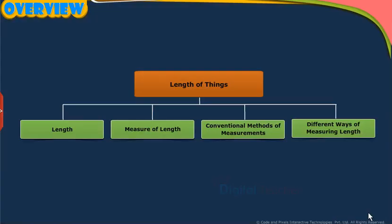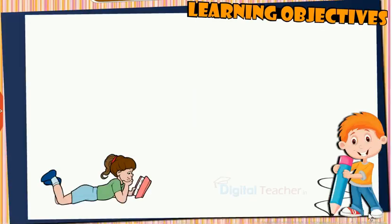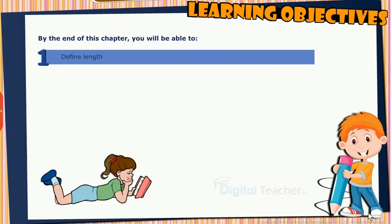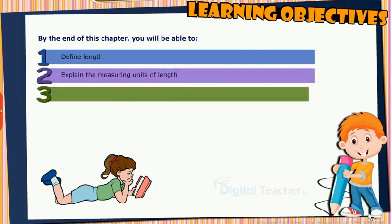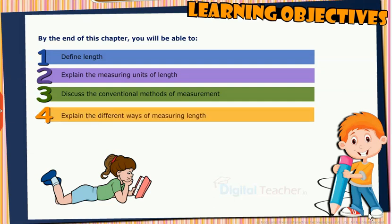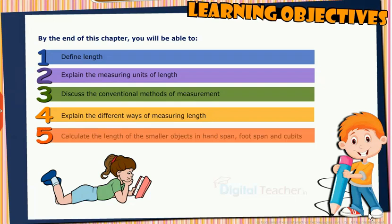This slide presents the overview of the chapter. By the end of this chapter, you will be able to: define length, explain the measuring units of length, discuss the conventional methods of measurement, explain the different ways of measuring length, and calculate the length of smaller objects in hand span, foot span, and cubits.